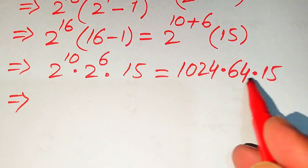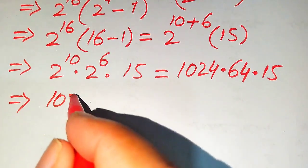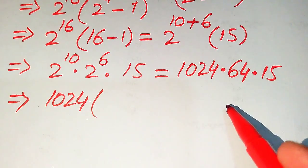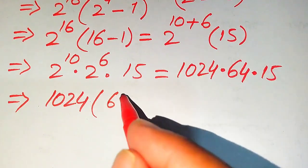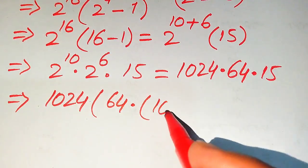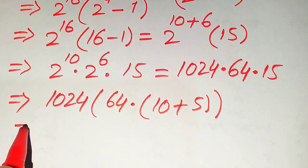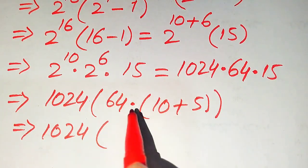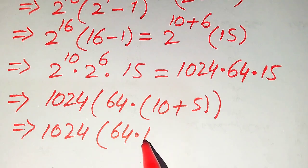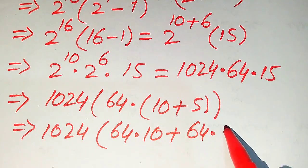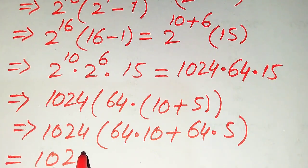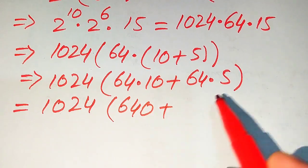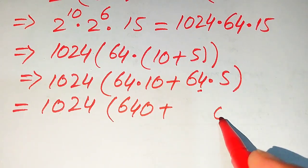Since a calculator is not allowed, we need to show all working. We use a smart method for multiplying larger numbers. We write 15 as 10 plus 5, then multiply 64 by both values: 64 times 10 plus 64 times 5. This gives 640 plus 320, which equals 960.